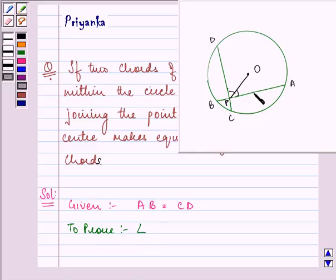Let me first draw OE, perpendicular here and then OF, perpendicular here. So, I need to prove that angle OPE is equal to angle OPF. And for this,